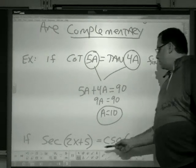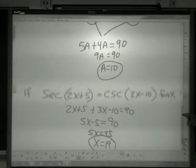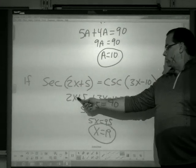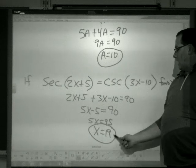They add up to 90. So I set the sum of those equal to 90. Combine like terms. Solve for x. X is 19.